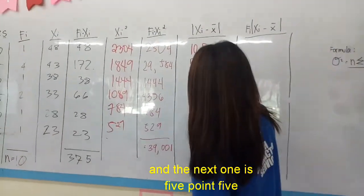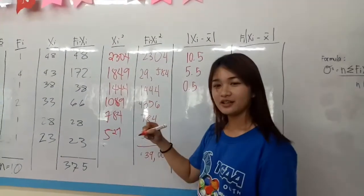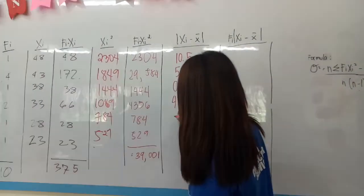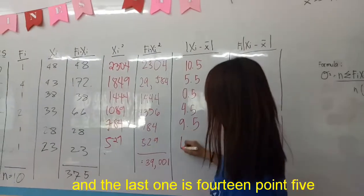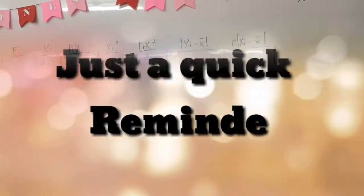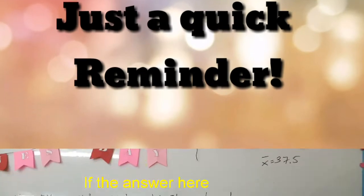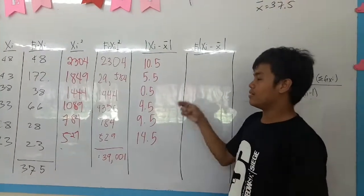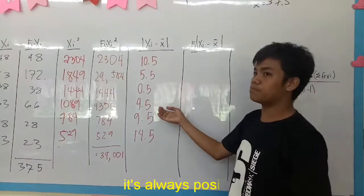The next is 0.5. The next is negative 4.5. Then negative 9.5 and negative 14.5. The answer here will never be negative, it's always positive.